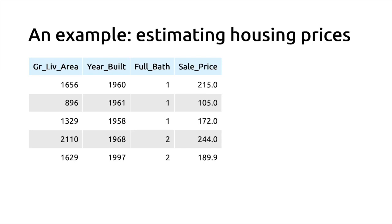To make things more concrete, let's start with a specific example: we want to estimate house prices. We have a small data table from a publicly available dataset called the Ames Housing dataset. We want to predict the sale price — expressed in thousands of dollars — from three input features: the gross living area, the year built, and the number of bathrooms.